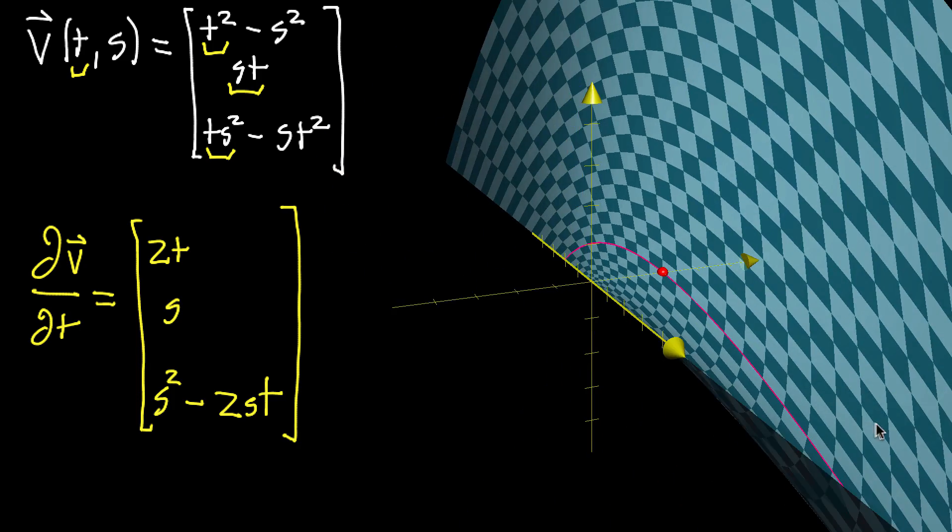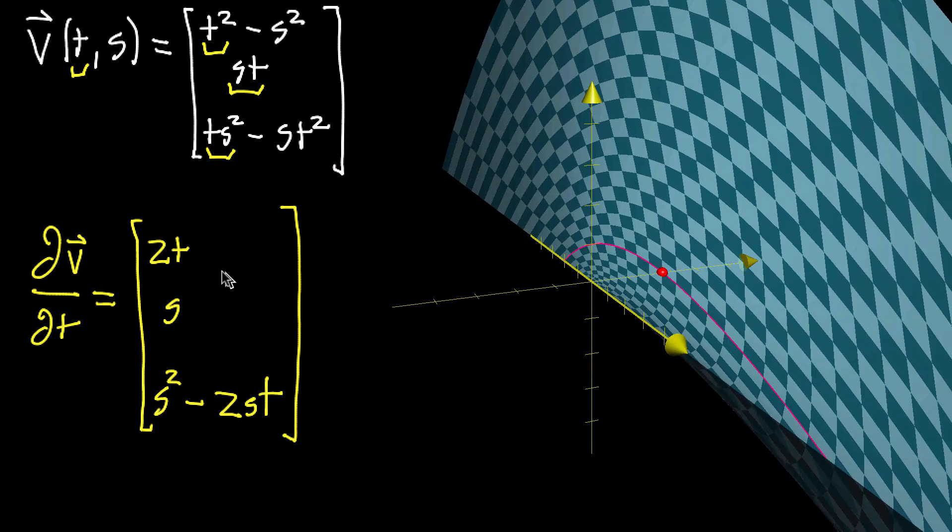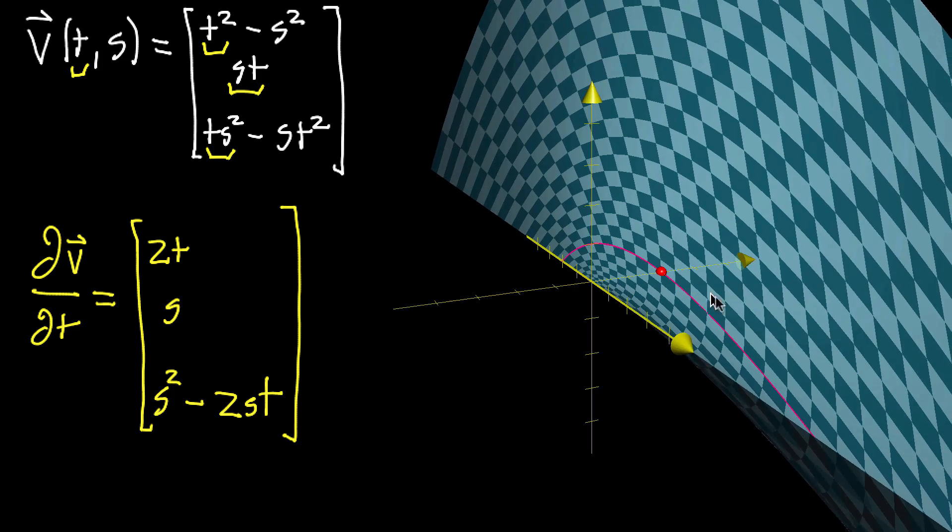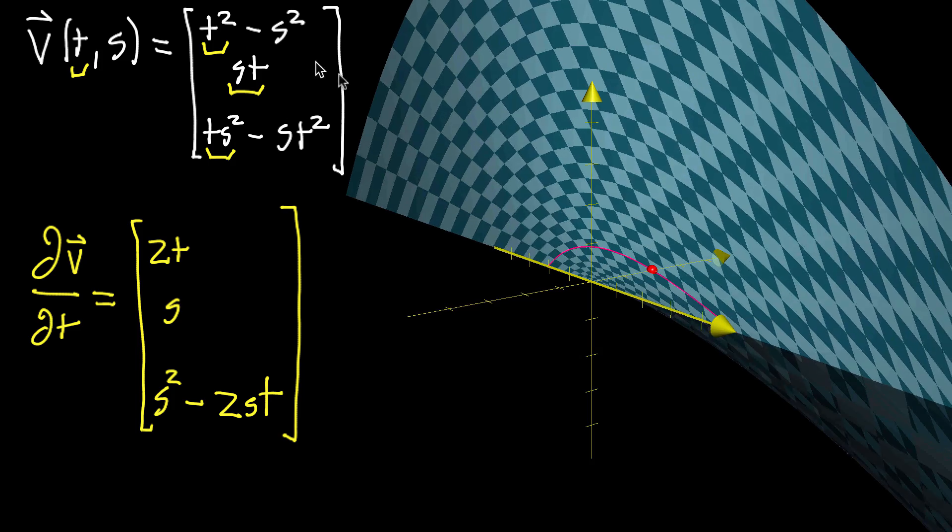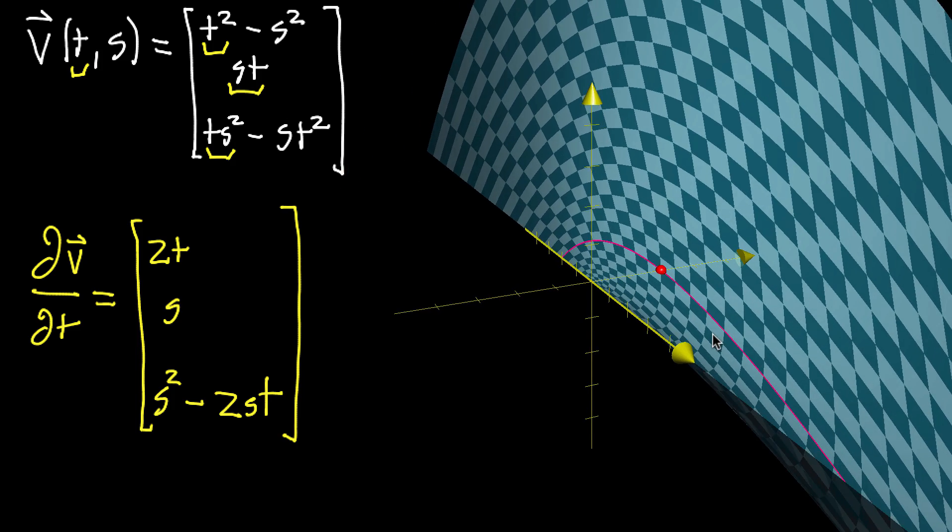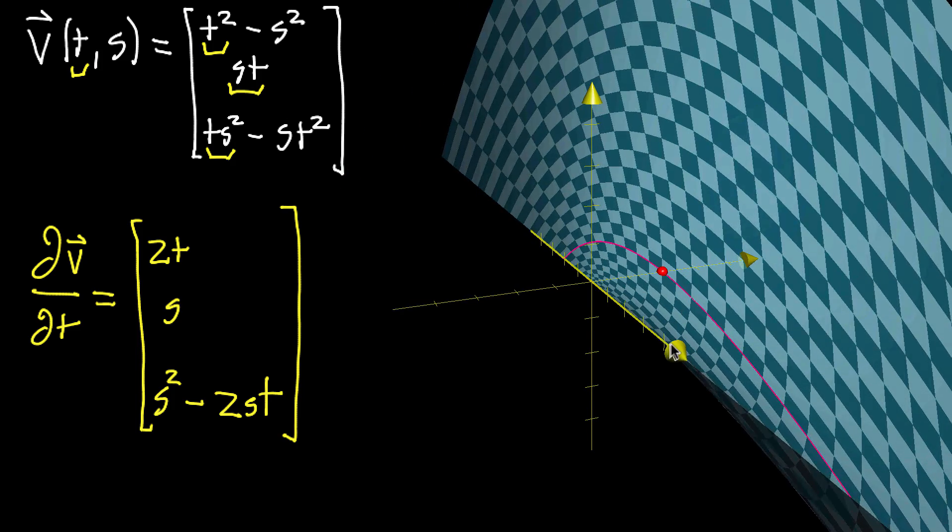Hello again. In the last video, I started talking about how you interpret the partial derivative of a parametric surface function - a function that has a two-variable input and a three-variable vector-valued output. We typically visualize those as a surface in three-dimensional space.